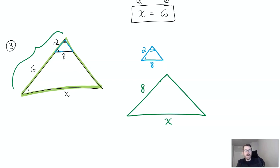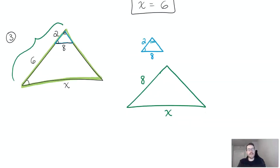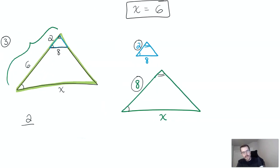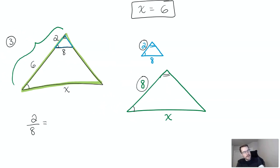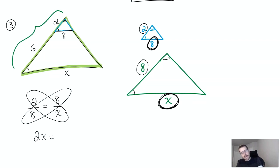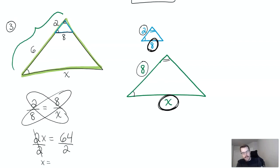Once we redraw the two triangles, we set up a proportion. The top-left two is related to the top-left eight, as the bottom eight is related to the bottom x. Cross multiply: two x equals eight times eight, which is 64. Divide both sides by two, and we get x equals 32.